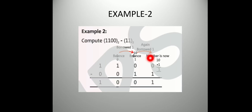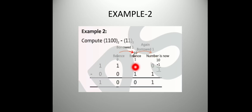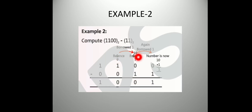Now here, since we have borrowed 10, this position becomes 0. Again when 10 comes, 10 minus 1 is also 1 — here also 1. Then 0 will be there. Since we have taken 1, meaning we have taken 10, that 1 is gone to this side. Now 0 minus 0 is 0, and 1 minus 0 is 1.